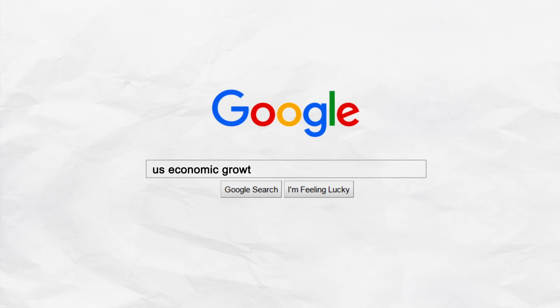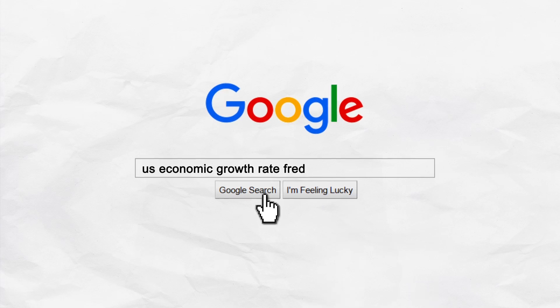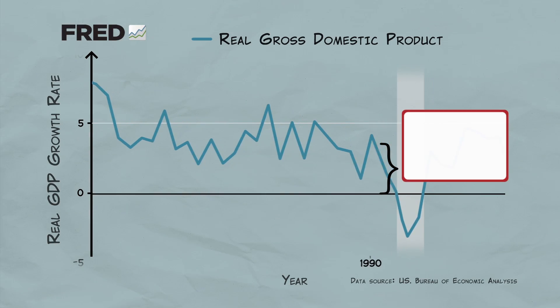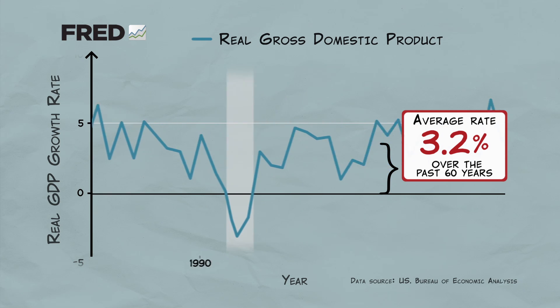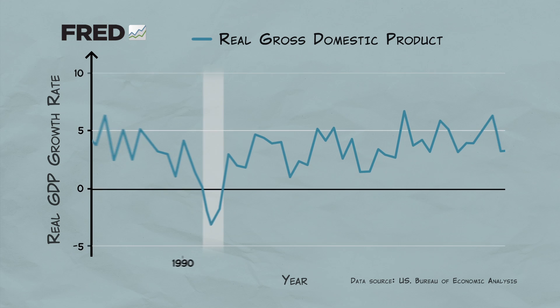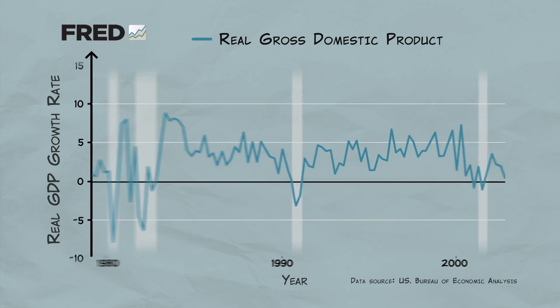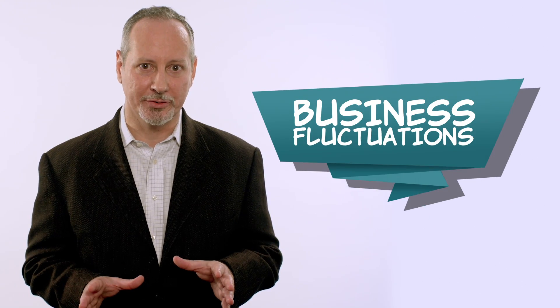Real GDP in the United States, for example, has grown at an average rate of about 3.2% per year over the past 60 years. But the economy didn't grow at this rate every day, or every month, or even every year. We call the fluctuations in real GDP around its long-term trend or normal growth rate business fluctuations.